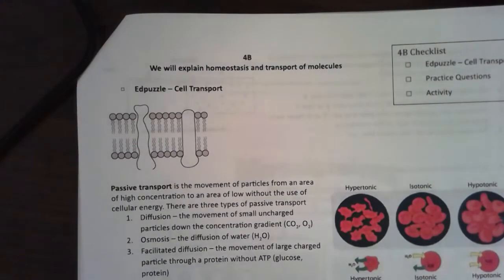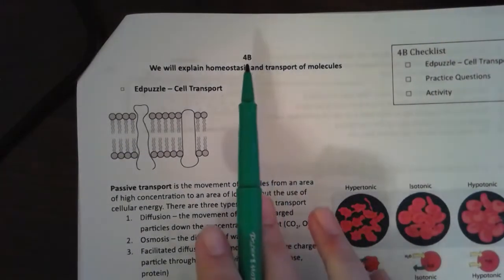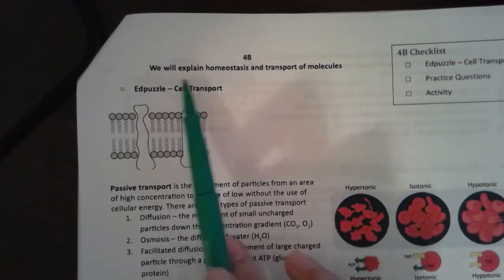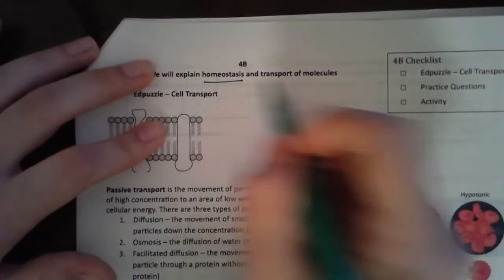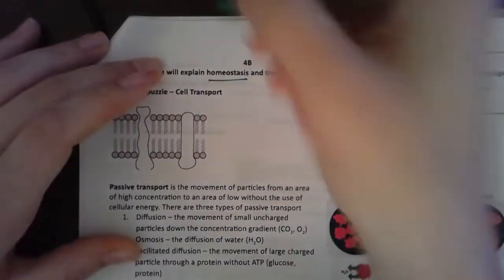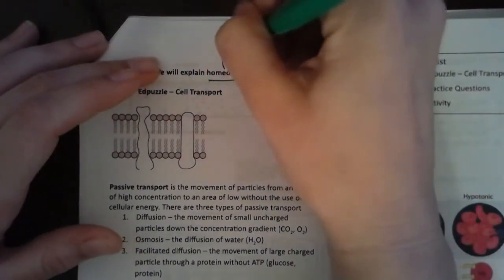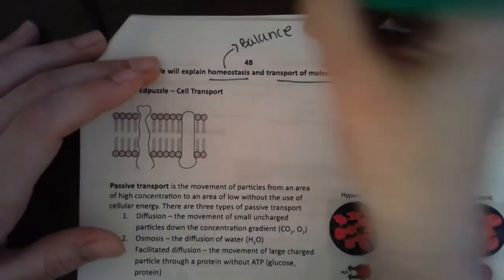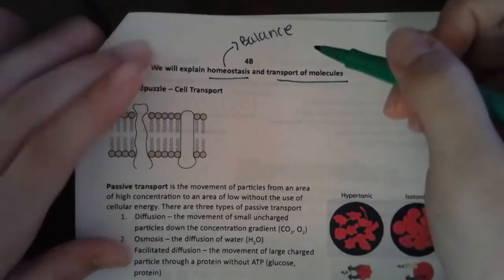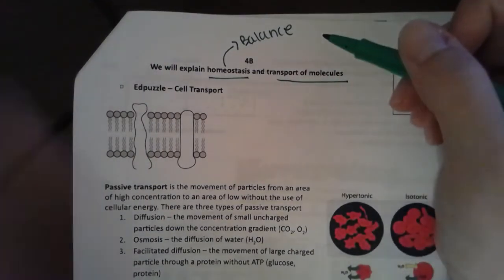Well hello, so this is our video about 4B, explaining homeostasis and the transport of molecules. Homeostasis, let's remember, is balance, and transport is how we get molecules from one side of a cell membrane to the other, how we maintain that balance.